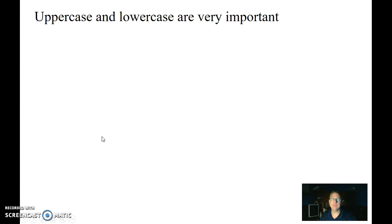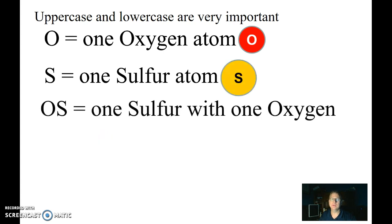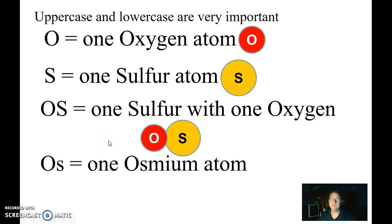Now it's really important to notice that uppercase and lowercase are very important when we're dealing with the periodic table. So if I just had one capital O, that's one oxygen atom. A capital S would be one sulfur atom. And if I put a capital O with a capital S, that's one sulfur with one oxygen. But if I do a capital O with a lowercase s, that's one osmium atom, which is a metal, which is very different than a sulfur and an oxygen. So we need to make sure that we're paying close attention to the capital and the lowercase letters.